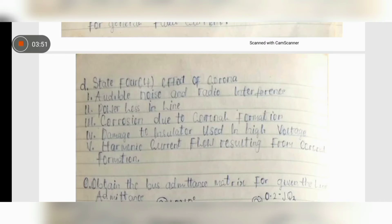State four effects of corona. Some people will be thinking corona is coronavirus. No, no, no. We also have corona in electrical power which we are going to be looking at very soon. We have number one, audible noise and radio interference. Number two is power lost in line. Number three is corrosion due to corona formation. Number four, damage to insulator using high voltage. Number five, ammonia current flow through resulting from corona formation.